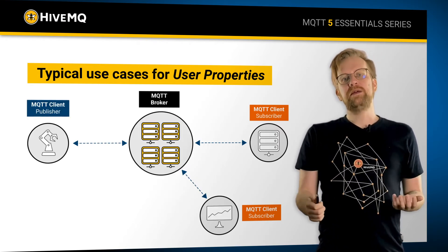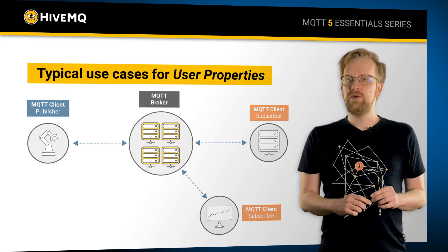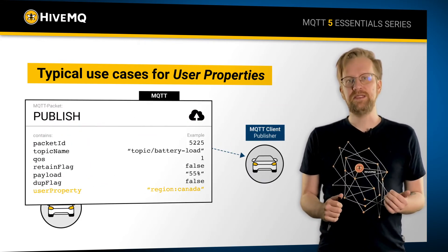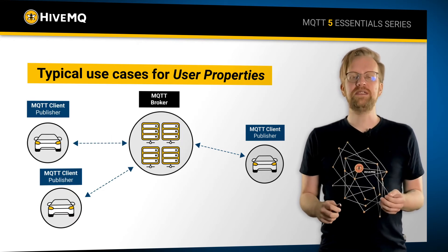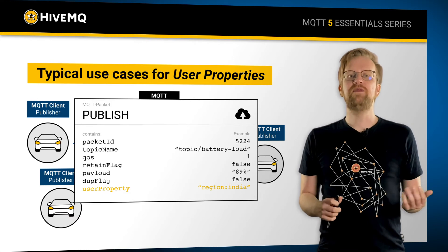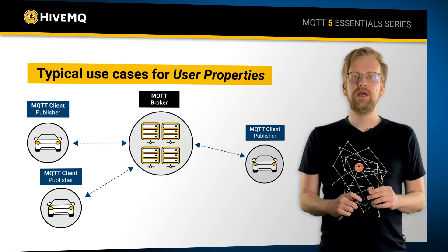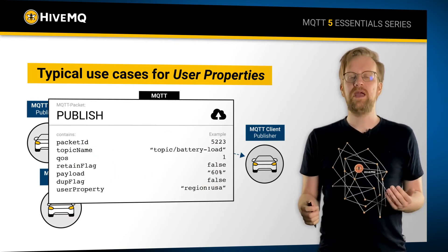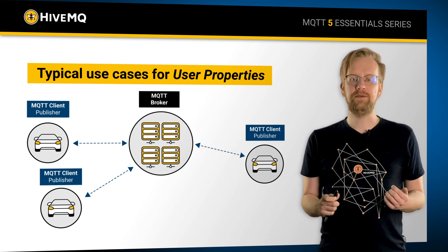Probably the most common use case I have seen so far for this feature is traceability. With user properties, it is now possible to include information about the sender in your packet, even though MQTT is using a publish-subscribe paradigm.